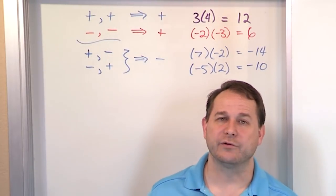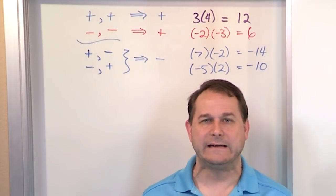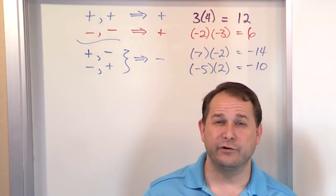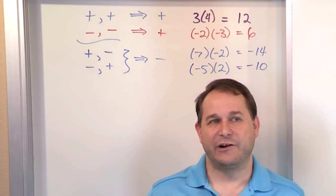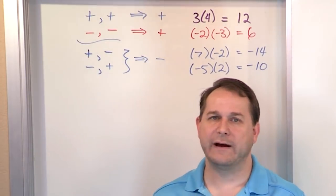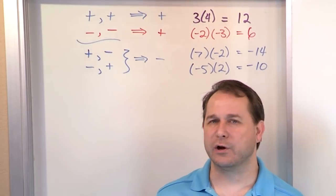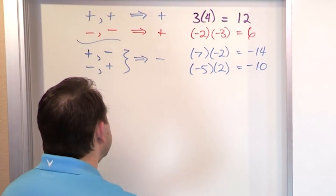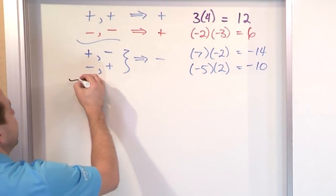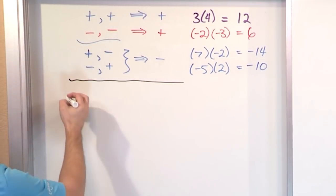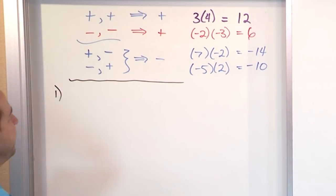It's actually much easier to multiply things together. These same rules apply to division. Multiplication and division are easier than addition, because when you add, you have to figure out which one has the larger absolute value. When you're multiplying, it's very simple. Now that we have a good review, let's apply it to more complicated problems, including order of operations.